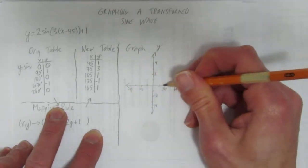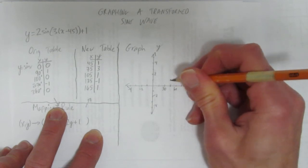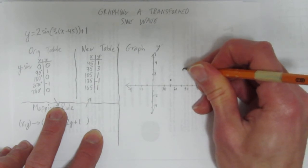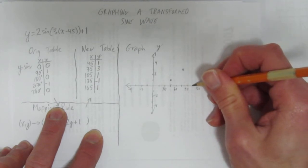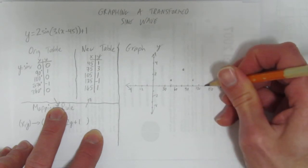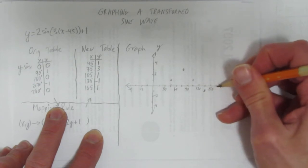Let's put our points. 45, that's here, and 1. Put a dot. 75, that's here, and 3. Put a dot. 105, that's here, and 1. Put a dot. 135, a negative 1, that's here. And last, 165. That's our last tick. And 1.